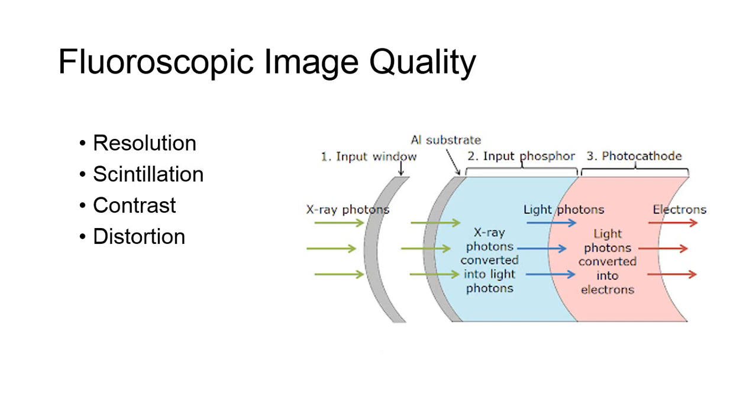For this reason, there's a statistical ratio of the number of absorbed photons and the output image quality. In this presentation, we're going to discuss the four basic elements used to define fluoroscopic image quality.